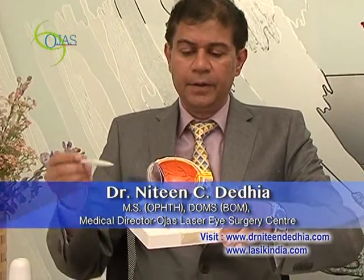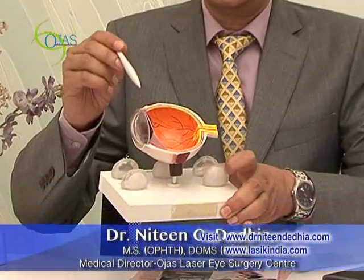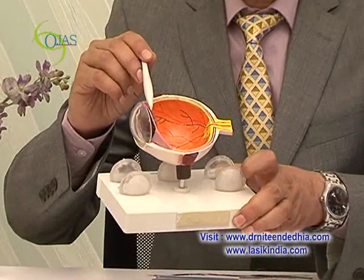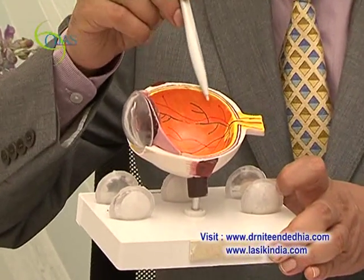Retina is the most sensitive and most important layer and structure of the eye. If you look at this eye, we have got the cornea, the lens, and the retina behind.